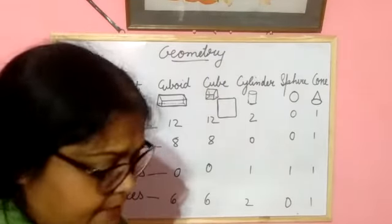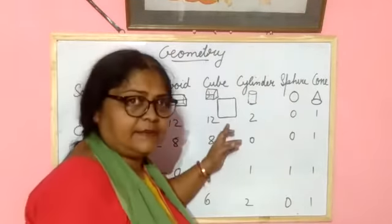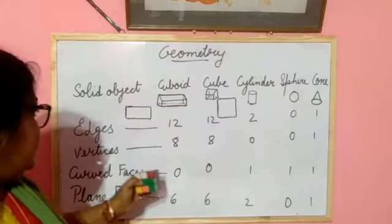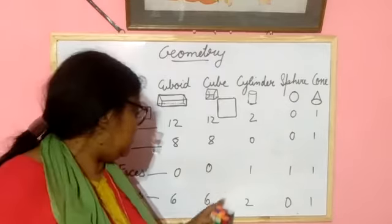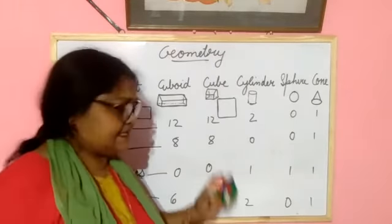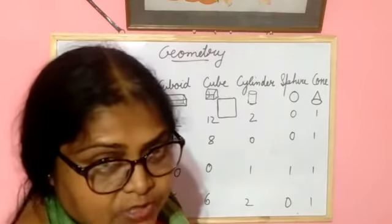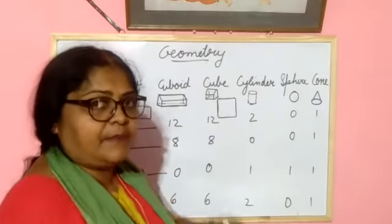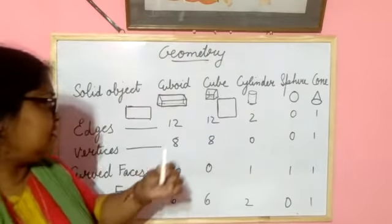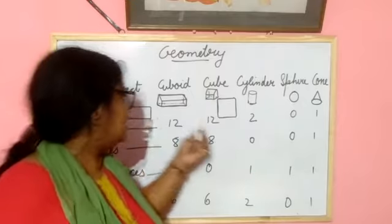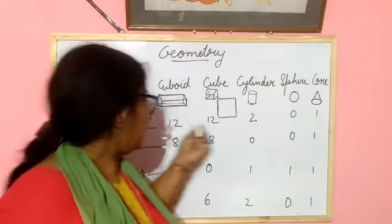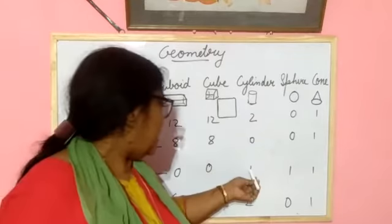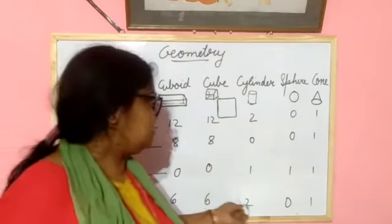Next, you learned about the cube — same properties: 12 edges, 8 vertices, 0 curved faces, and 6 plane faces. For the cylinder: 2 edges, 0 vertices, 1 curved face, and 2 plain faces.